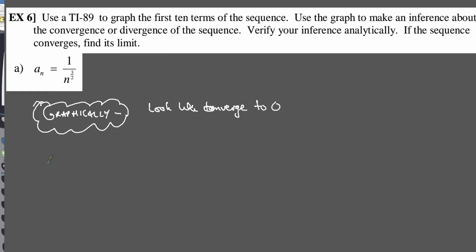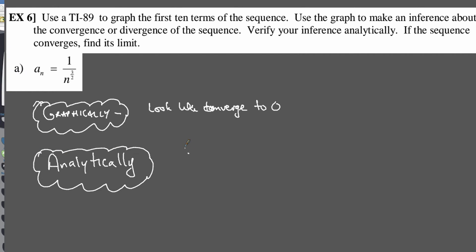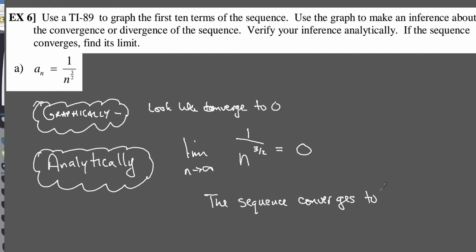Now analytically — the other piece we look at — we use a formal math process: the limit process. If we take the limit as n goes to infinity of a_n, which is our sequence 1 over n to the 3/2, the denominator is going to blow up really, really fast, becoming a huger and huger number, and it will converge all the way down to zero. So the sequence does, in fact, converge to zero. The problem asks us to find the limit if it converges — we found it: the sequence converges to zero.